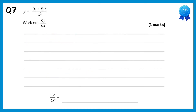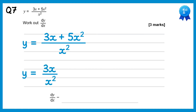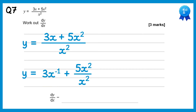For this question we need to rewrite the function as two fractions: 3x over x squared plus 5x squared over x squared. For the first fraction, x to the 1 divided by x squared — subtract the powers, so 1 take 2 is negative 1 — giving 3x to the negative 1. For the second, the x squareds cancel so it's just plus 5. Now we differentiate: negative 1 times 3 is negative 3, and the power goes from negative 1 down to negative 2. The constant term 5 differentiates to 0, so we're done.